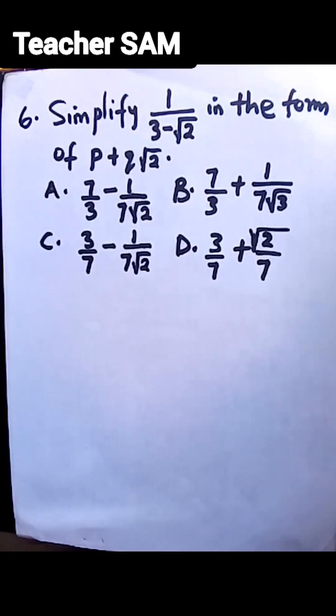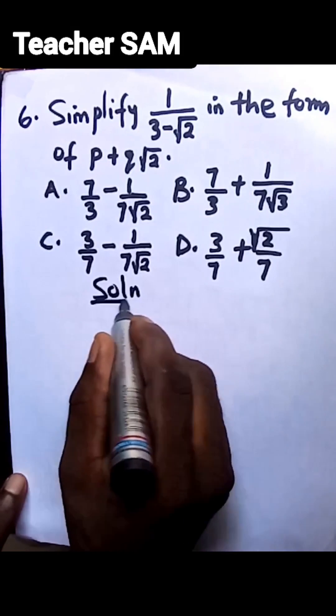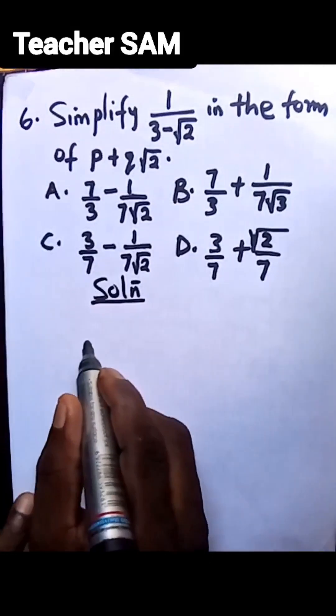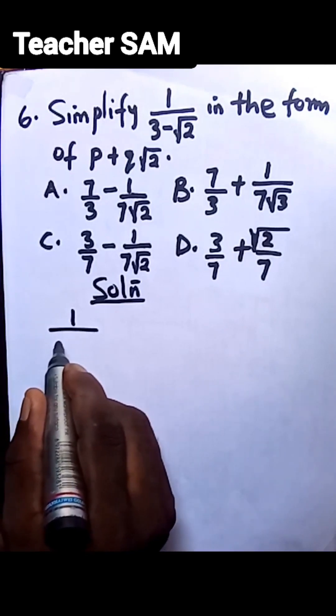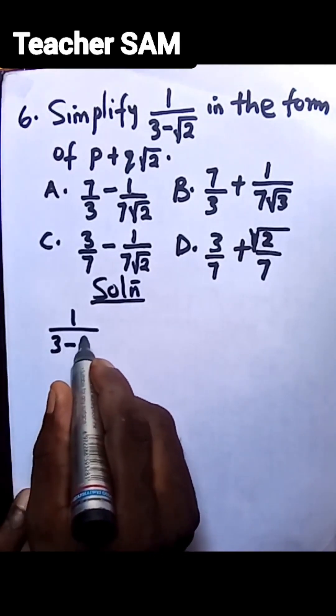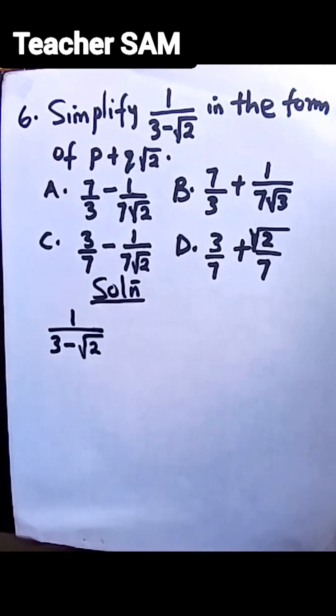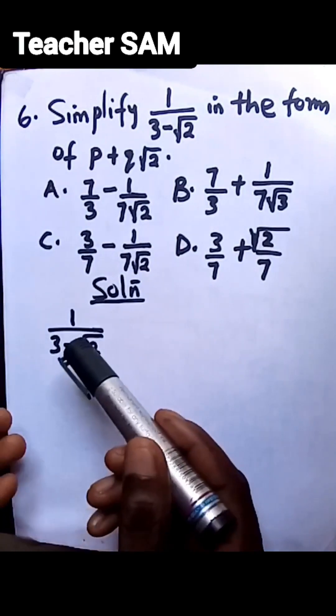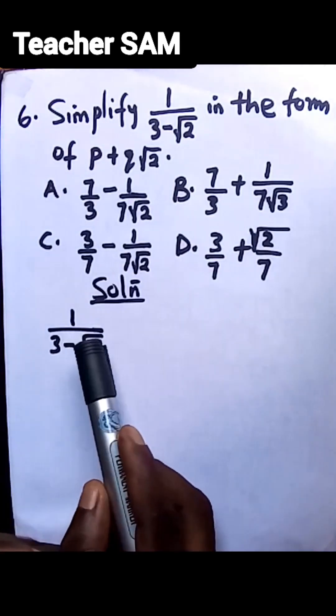Solution: Let's copy what we have here: 1/(3-√2). Now we are asked to solve this in this form. Well, before you even look at the form, what we have here is this question from surd, and the denominator here is in surd form.